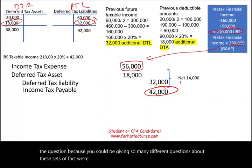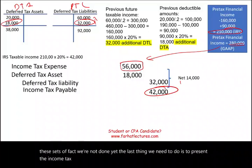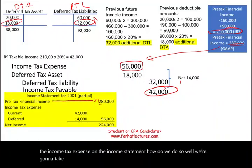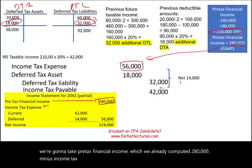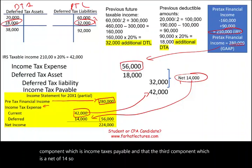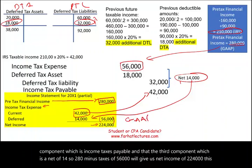The last thing we need to do is present the income tax expense on the income statement. We take pre-tax financial income of $280,000 minus income tax expense. Income tax expense has two components: a current component (income taxes payable of $42,000) and a deferred component (net of $14,000), totaling $56,000. So $280,000 minus $56,000 gives us net income of $224,000. This is the GAAP financial statement presentation.